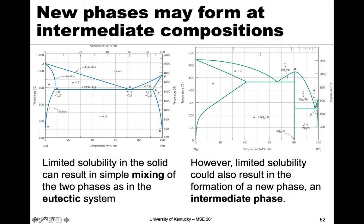The reason something like this might happen is that the two materials are so different — they have such different electronegativities — that it's much like a ceramic in that it forms a new structure. They're so different they like to be in specific positions of a lattice, and therefore they form a new phase with new properties. That's what an intermediate phase is.